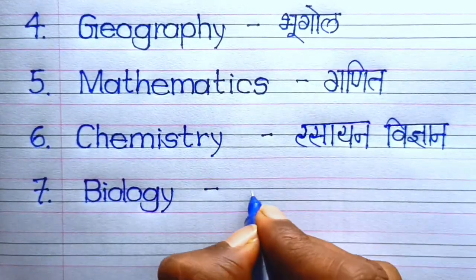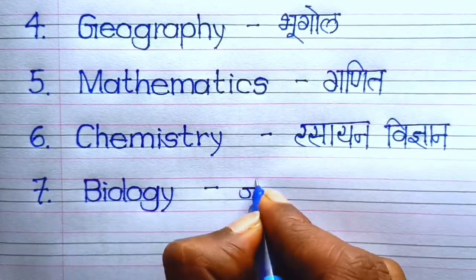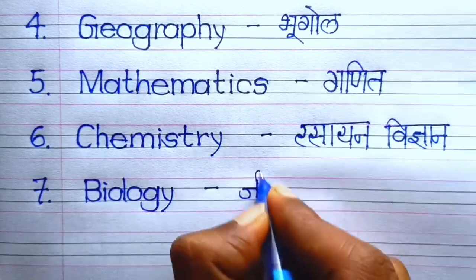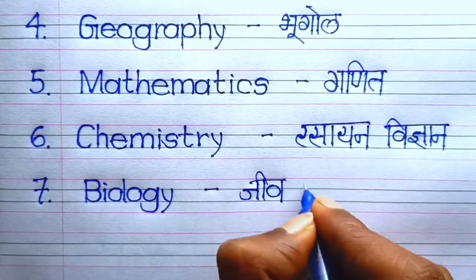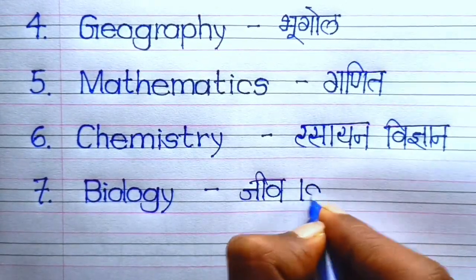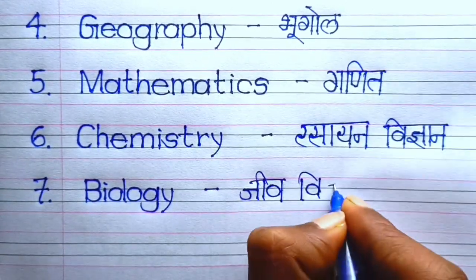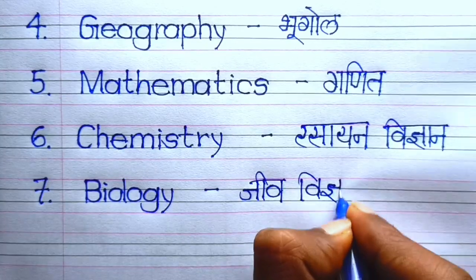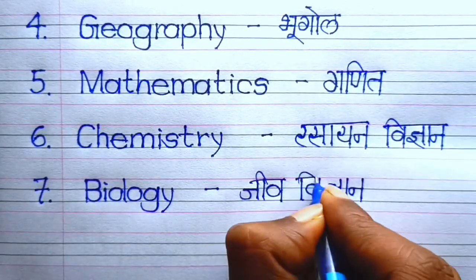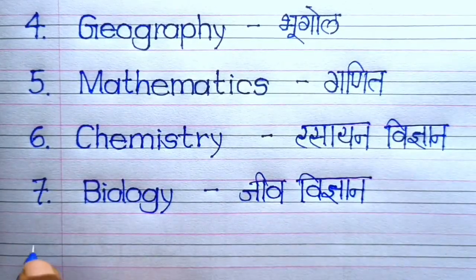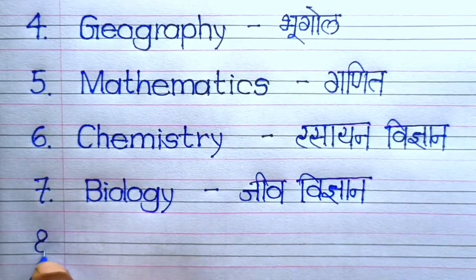Number 7: Biology. B-I-O-L-O-G-Y. Biology means Jeev Vigyan.